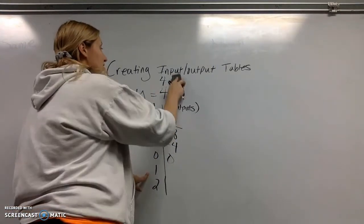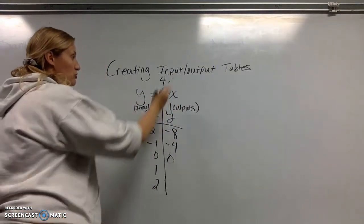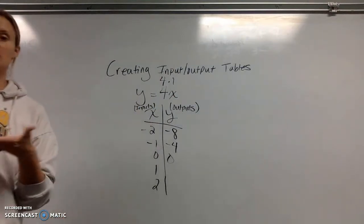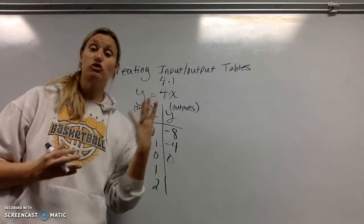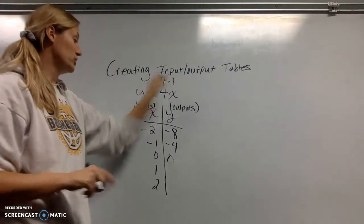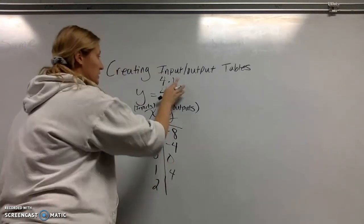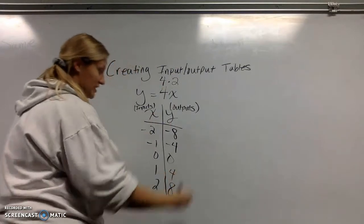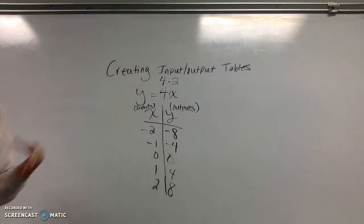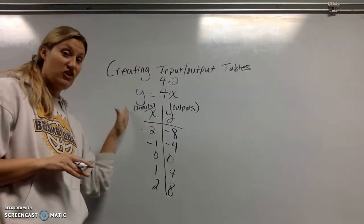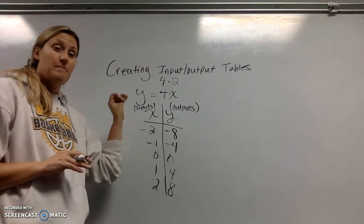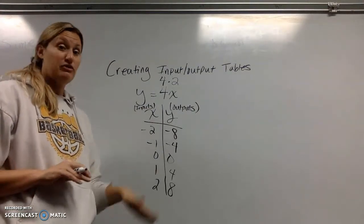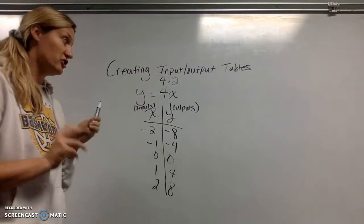Now I'm going to do it with positive 1 and positive 2. And you don't necessarily need to write this. Some of us can do it in our head, but I'm writing it to show you what I'm doing. So 4 times 1 is 4. Now I plug 2 in. 4 times 2 is 8. So that is pretty simple. That's my input-output table of Y equals 4X for these specific inputs. If I had different numbers to input for X, I would do the same process, just with different numbers.